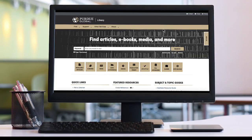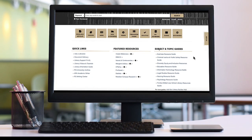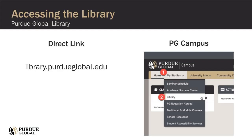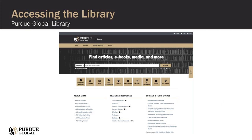To access these services and resources, you'll naturally need to visit us. There are a few ways to do this. First, to access the library's website, you can navigate your browser directly to the library's web address, library.purdueglobal.edu. You can also find us by going to your student portal under My Studies. These links will bring you to the main library website and homepage.